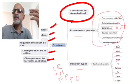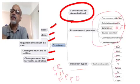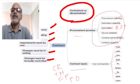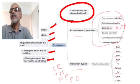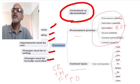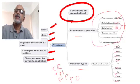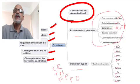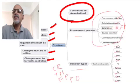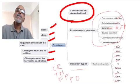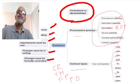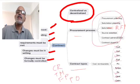Then there is CPAF, cost plus award fee, where the buyer gives some advance to the seller. And cost plus percentage of cost (CPPC) — primarily used with architects, where the architect gets maybe two to three percent of the project cost. In some countries this is banned or illegal, because the incentive for the seller under CPPC is to increase the project cost in order to make more money, which does not protect the interest of the customer.